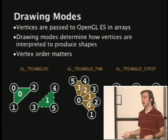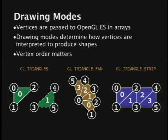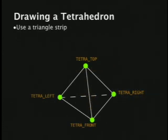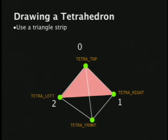Triangle strips are the same kind of idea — you always reuse the last two vertices. Let's try using a triangle strip to draw a tetrahedron. Assume vertices at positions called top, left, right, and front. Starting with vertices 0,1,2 in clockwise order gives us a backwards-facing triangle — the back of the tetrahedron.